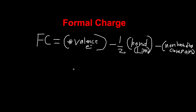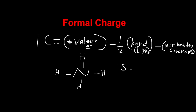So if we have a problem with nitrogen here, connected to four hydrogens, the question is how do we calculate the formal charge for nitrogen? All we do is look up the valence electrons for nitrogen, which is five, minus the bond line — how many bonds are connected — so we have one, two, three, four, so four bonds.